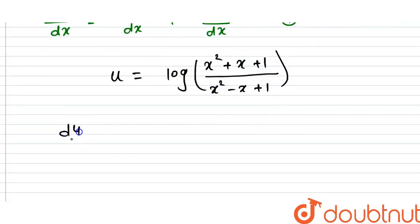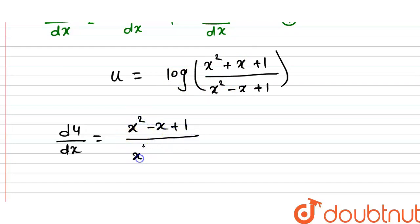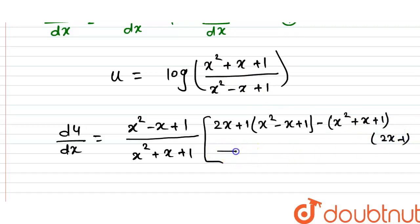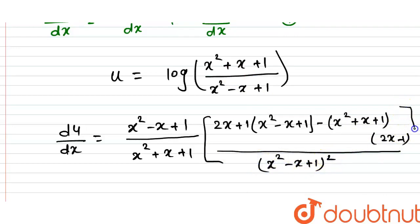Now we have to write du/dx. The differential of log x is 1/x, so this term comes in the numerator and this in the denominator, giving (x² - x + 1) upon (x² + x + 1). We apply the u/v quotient rule: u dash times v minus u times v dash, upon v². So the numerator becomes (2x + 1)(x² - x + 1) minus (x² + x + 1)(2x - 1), divided by (x² - x + 1)².